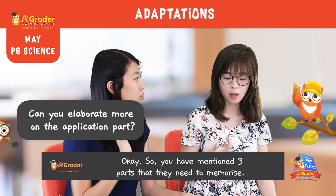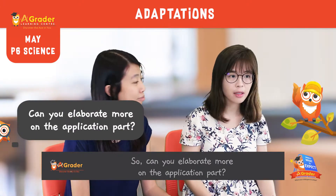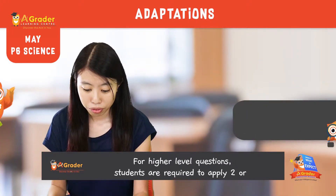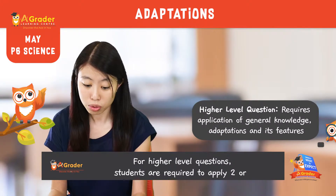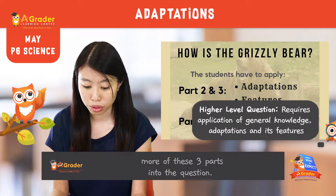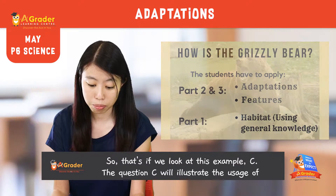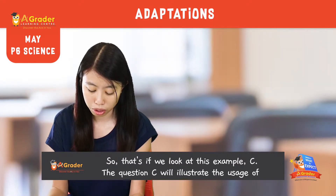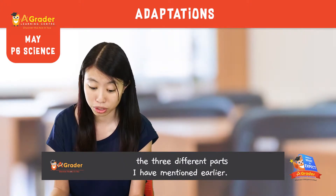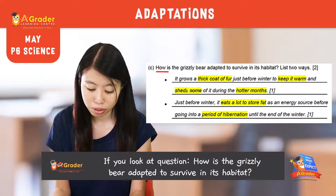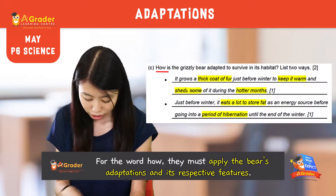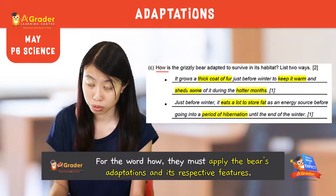So you have mentioned three parts that they need to memorise. Can you elaborate more on the application part? For higher level questions, students are required to apply two or more of these three parts. If we look at Question C, it illustrates the usage of the three different parts mentioned earlier. The word 'how' in the question requires them to apply their adaptations and their features, which is parts two and three.